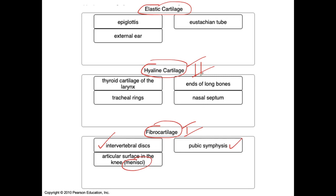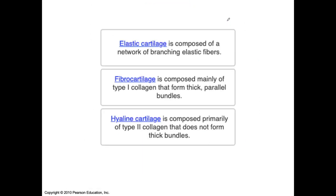Hyaline cartilage can be associated with degenerative joint disease, primarily because it's found at the ends of long bones. The thyroid cartilage is hyaline cartilage, as are the tracheal rings going around the windpipe and the nasal septum. Elastic cartilage is found in the helix of the ear — the external ear is quite flexible — the epiglottis that closes off the windpipe directing food down the esophagus, and the eustachian tube in the ear, which helps equalize pressure when changing altitudes, like taking off in a plane.